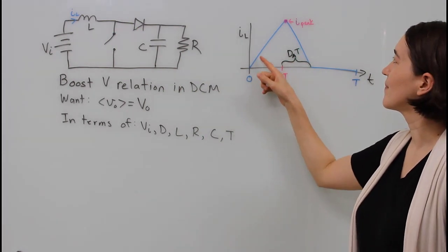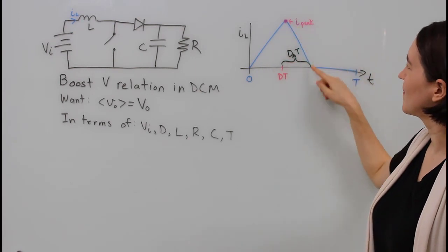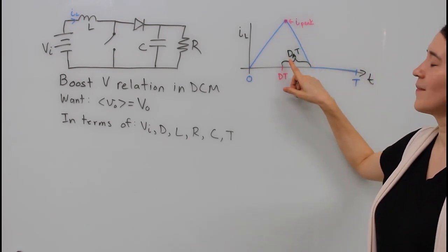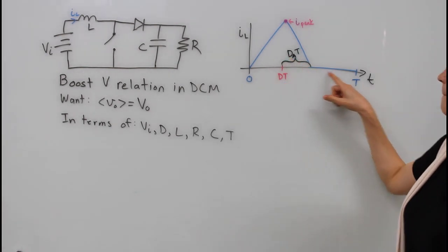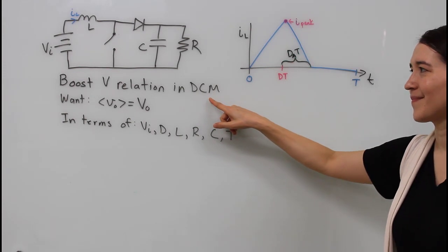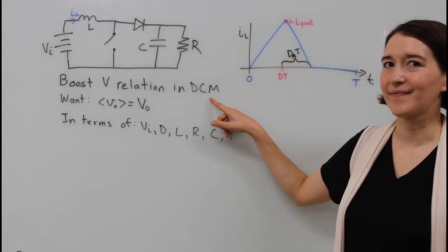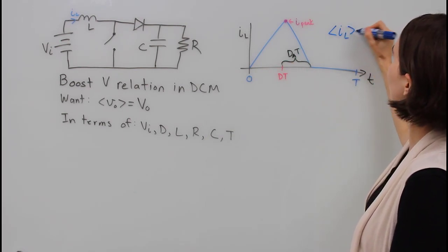In DCM, the current is going to go up to a peak value and then it's going to come back to zero. While it's decreasing in current, we call that time Da times T, so that's the sub period essentially. This is discontinuous conduction mode and we know that that average value is going to be the same as the average input current.